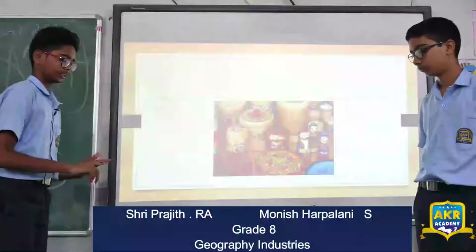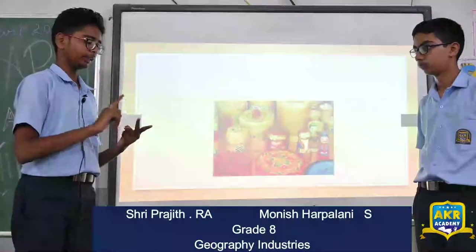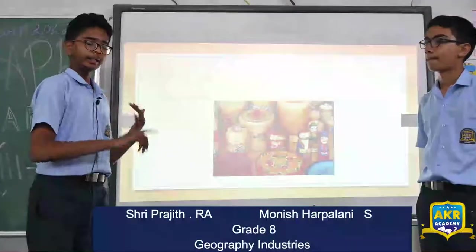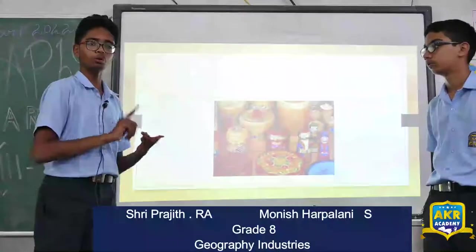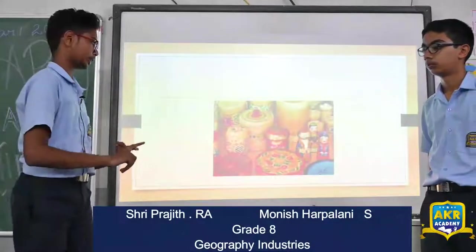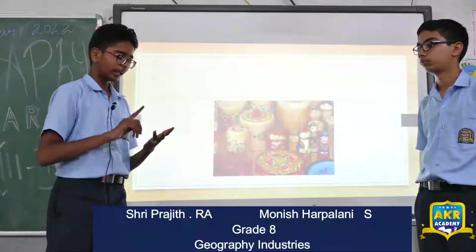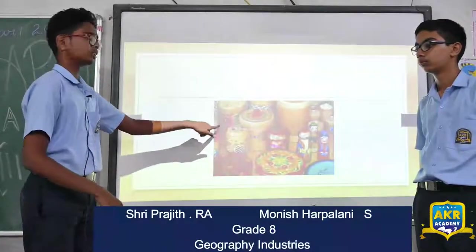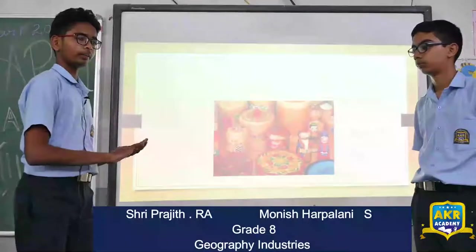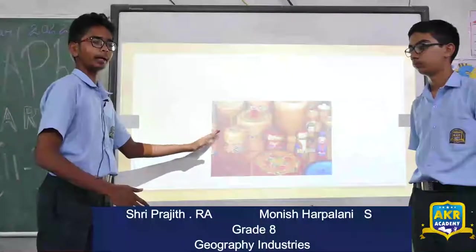The second type of industry is based on size. Industries based on size are classified into two main types: small scale industry and large scale industry. The picture here shows the cottage industry — that is art and crafts, embroidering, everything. This is the small scale industry. It does not require that much power or machines. It is done manually only.